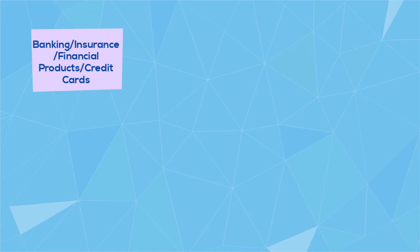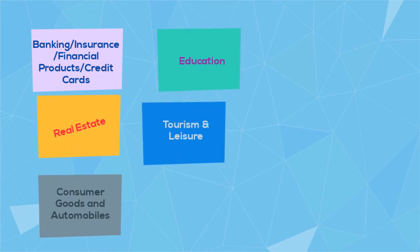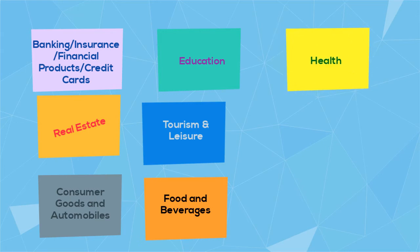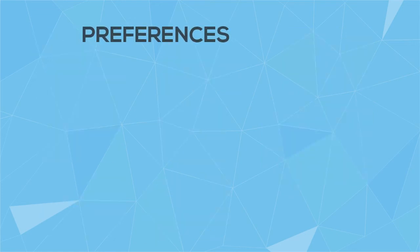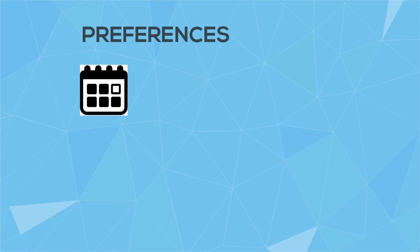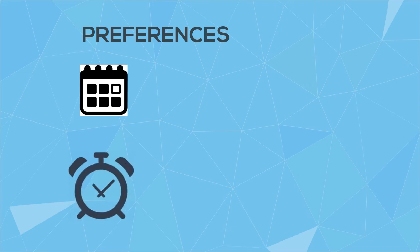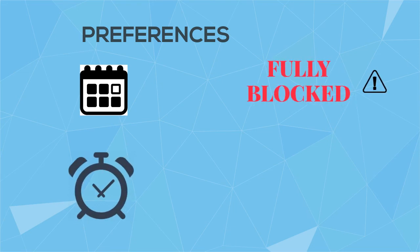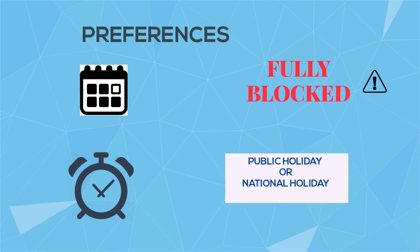The regulations also give you a preference of categories of commercial communications that you wish to receive, such as banking, financial products, real estate, education, tourism and leisure, food and beverage, health, and more. You also have preferences in terms of time bands and days for receiving such communications, or even the option to fully block such communications.